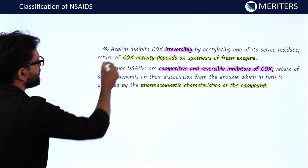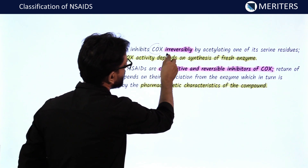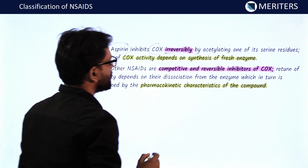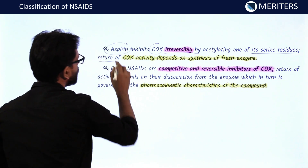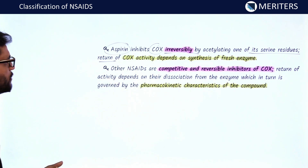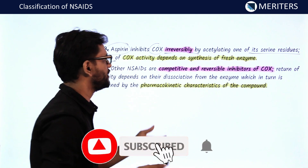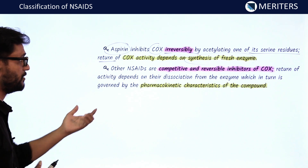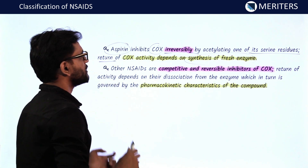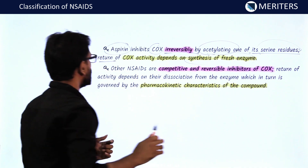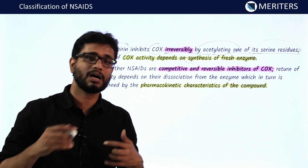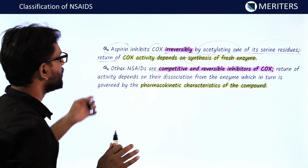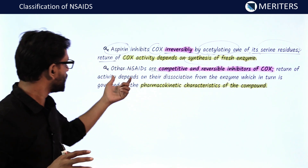Aspirin is an irreversible inhibitor of COX — the only drug in its category that inhibits COX irreversibly. If the enzyme needs to return to function, it cannot recover; fresh enzyme synthesis is required for prostaglandin production to resume. Aspirin inhibits COX by acetylating the serine residues of the COX enzyme.